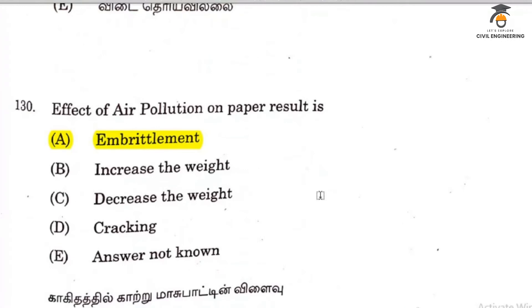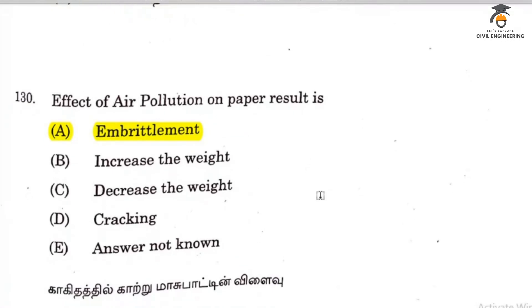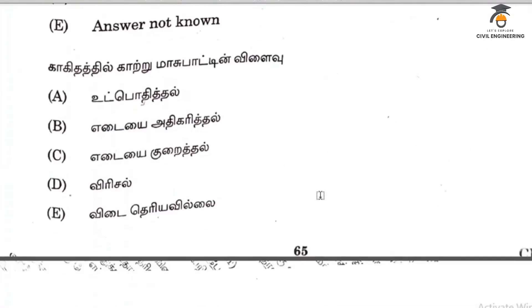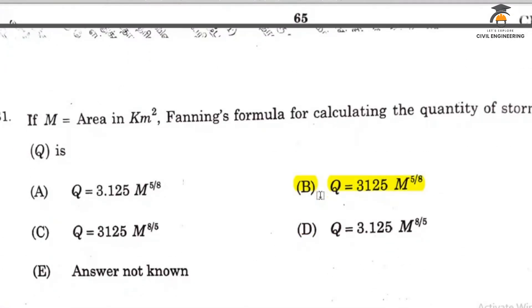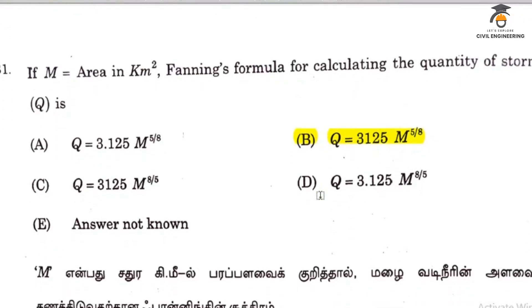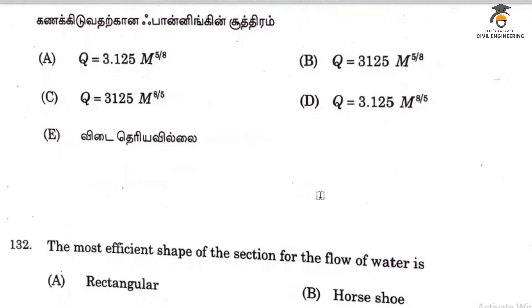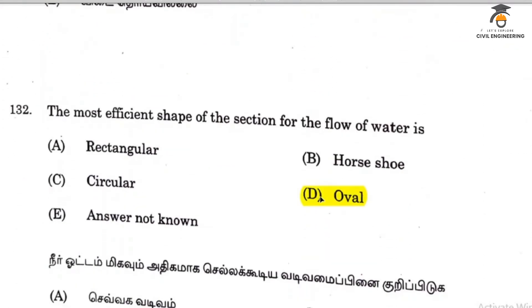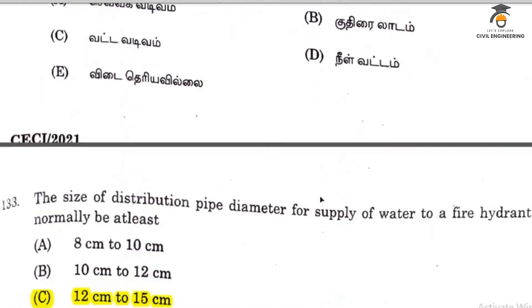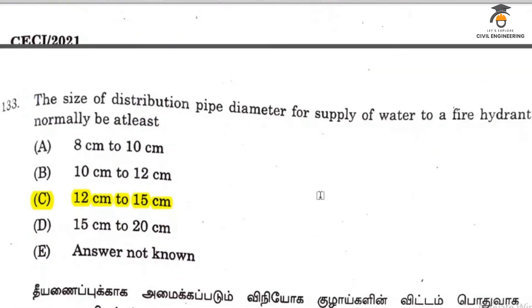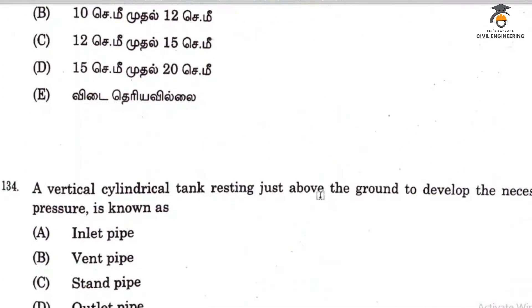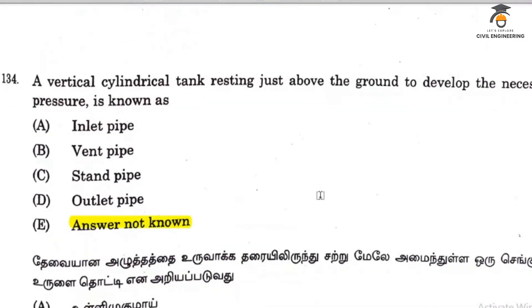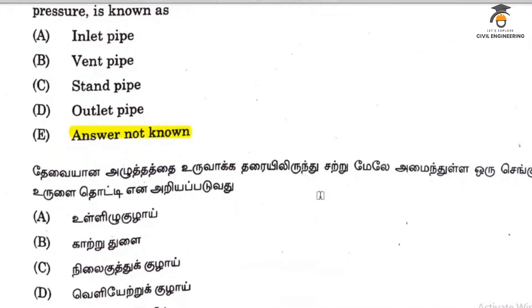The emission of pollutants into the atmosphere can be reduced by making proper changes or modifications in raw materials. The effect of air pollution on paper results in a decay rate element. Question 131 answer is B. Question 132 relates to oval. Question 133 is 12 cm to 15 cm.